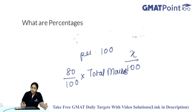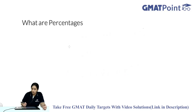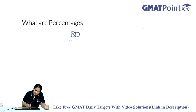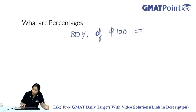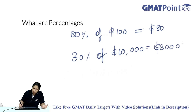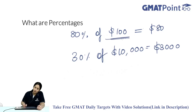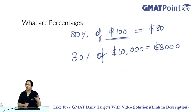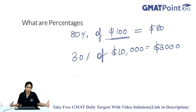Percentages are always defined as percentages of something, so the absolute value will differ. When you convert a percentage to an absolute number, it might be very different from what you're comparing. For example, 80% of $100 is $80, but 30% of $10,000 is $3,000. So though 80% is greater than 30%, the base value also matters — you must always note what the percentage is of.